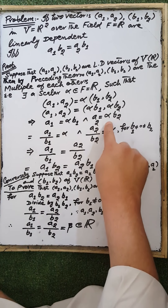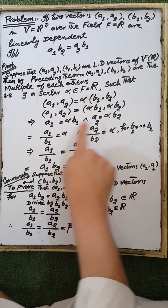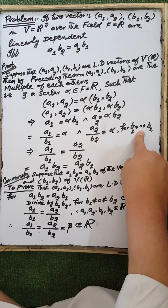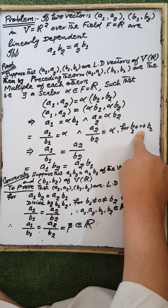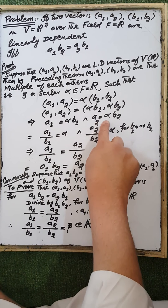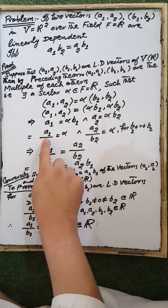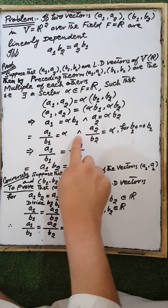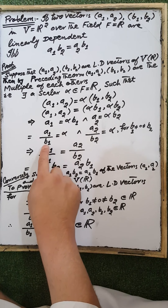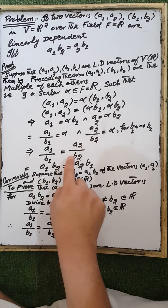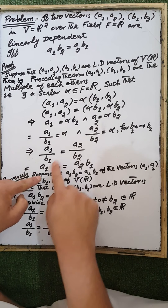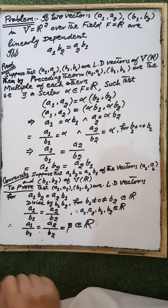By the condition of equality, the first coordinate equals the first coordinate and the second coordinate equals the second coordinate. Suppose that b1 and b2 are not equal to zero. In this case b1 and b2 are real nonzero quantities. We can divide the first equality by b1 and the second by b2, giving a1/b1 = alpha and a2/b2 = alpha. Since both equal alpha, by the transitive property a1/b1 = a2/b2, and after rearrangement a1·b2 = a2·b1, which is required.